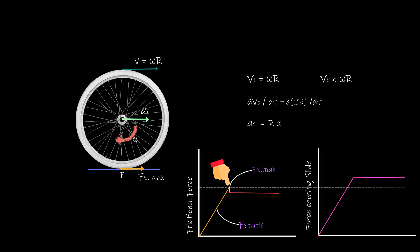But this force, that is Fs max, was not large enough to neutralize the force causing the slip and therefore the wheel started slipping or sliding. And once it started sliding, kinetic friction kicked in.